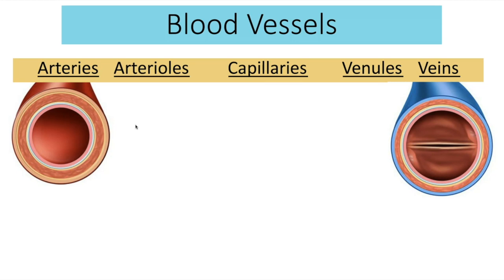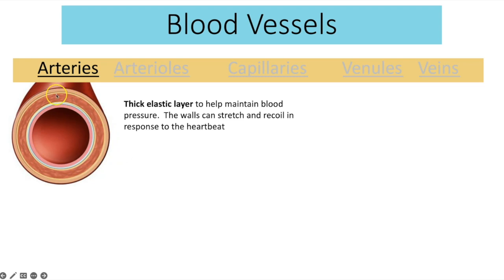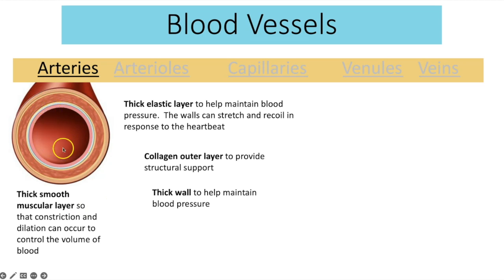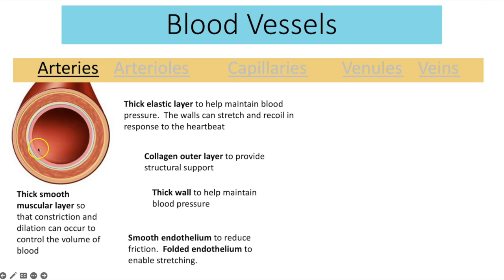We're going to go through five key types of blood vessels: the arteries, arterioles, capillaries, venules, and veins. Starting with the arteries — they have a thick elastic layer so they can stretch and recoil in response to the heartbeat. When the heart pumps blood out, the arteries stretch and then recoil to help maintain blood pressure. There's also a collagen outer layer for structural support, and a thick smooth muscular layer for constriction and dilation to control blood volume and smooth blood flow. Overall, these thick layers result in a smaller lumen.